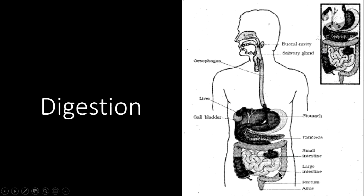You can see in the diagram: small intestine, large intestine, buccal cavity, salivary gland, oesophagus, liver, gall bladder, pancreas, small intestine, large intestine, rectum, and anus. I have covered the buccal cavity already — you can see Part 1 for that. I will cover all the other parts in detail in the next video.